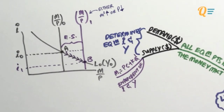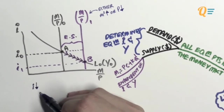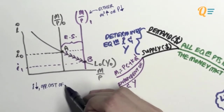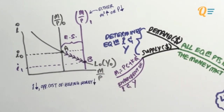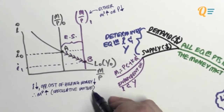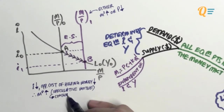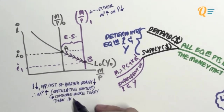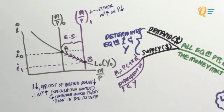Let's look at the intuition on why this is the case. When interest rates fall, the opportunity cost of holding money falls. We went through this in the previous video. So when this opportunity cost falls, the demand for money increases, and this is the speculative motive of holding money in action. Basically, people will want to consume more today than in the future because of lower interest rates. If I have to put my money into a place which earns me very little interest, I would prefer to take that money out and spend it today instead.